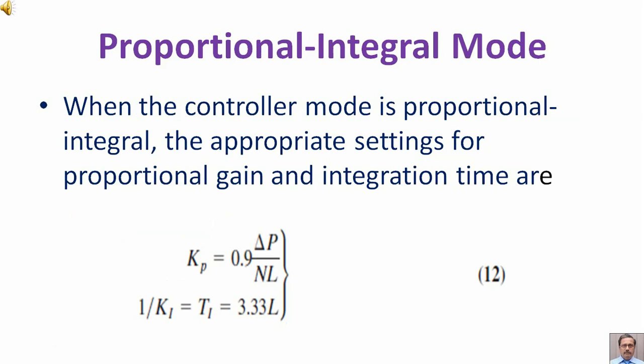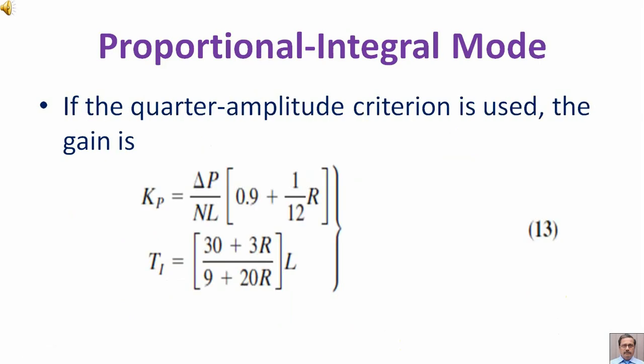Proportional integral mode: When the controller mode is proportional integral, the appropriate settings for proportional gain and integration time are given by equation 12. If the quarter amplitude criteria is used, the values are given by equation 13 for the proportional integral mode.